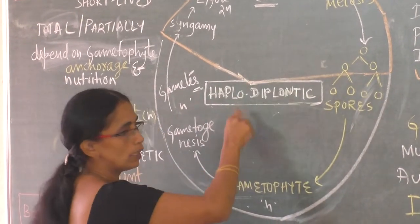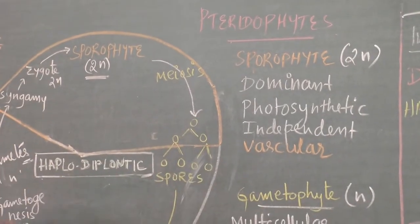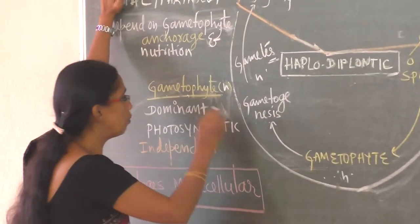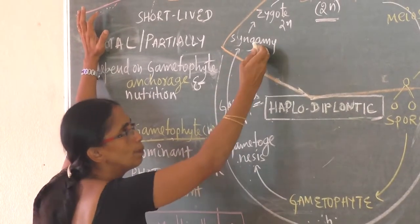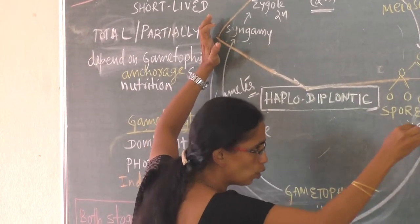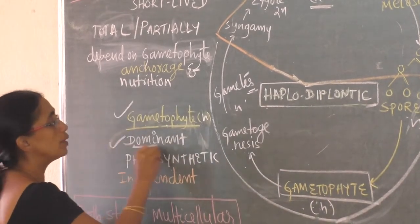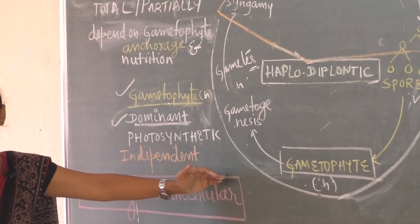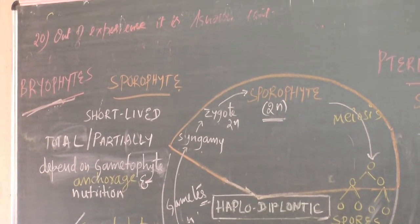In the haplodiplontic cycle of bryophytes, both the gametophyte and sporophyte stages are multicellular. The dominant phase is the gametophyte. The sporophyte undergoes meiosis to produce haploid spores, and these spores on germination give rise to the haploid gametophyte. Both stages are multicellular — this distinguishes it from the haplontic cycle where the sporophyte is just one cell.